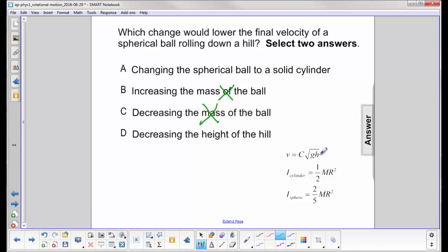This equation here, if we decrease the height, we will decrease the final velocity. That seems to make sense anyway, so that's good.